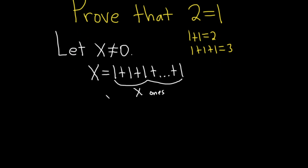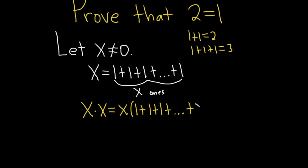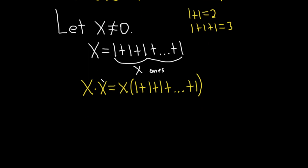In the next step, we're going to multiply both sides of this equation by x. Whenever you have an equation, you're allowed to multiply both sides by a non-zero number, and x is not zero, so all is good. On the left-hand side, we'll have x times x. On the right-hand side, we'll have x times the quantity 1 plus 1 plus 1 plus dot dot dot plus 1. Nothing funky here — simply multiplying both sides by x. So on the left-hand side, x times x gives us x squared, since we just add the exponents when the bases are the same.